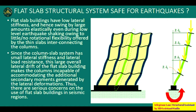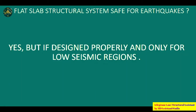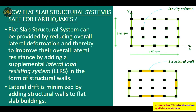Flat slab systems have low lateral stiffness, so they swing by a large amount elastically even during low-level earthquakes. Because the column-slab system has small lateral stiffness and lateral load resistance, the overall lateral drift makes columns incapable of accommodating additional secondary moments. Therefore, flat slab systems should be designed properly and used only for low seismic regions.